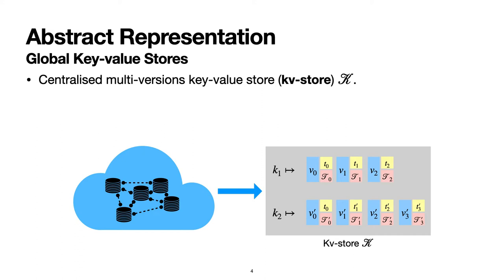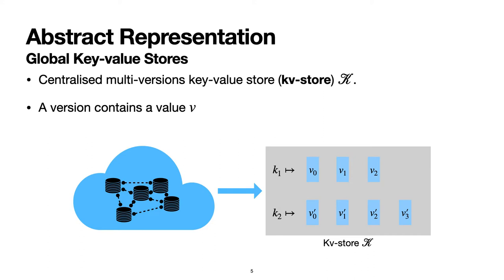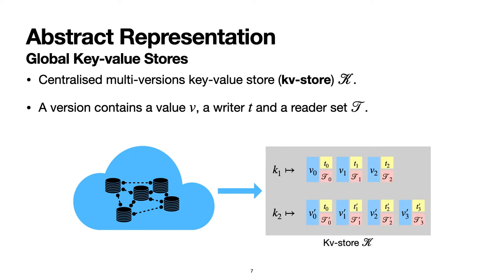Each key in the key-value store is associated with a list of abstract versions. Each abstract version contains a value, the writer who committed this value, and a set of readers.